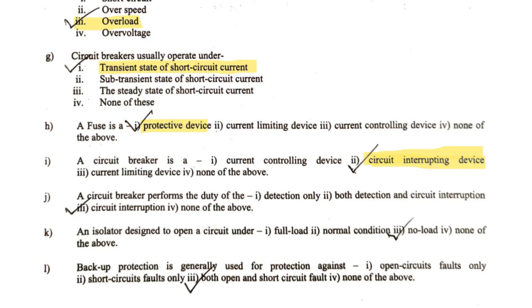The next question: a circuit breaker performs the duty of — detection only, both detection and circuit interruption, circuit interruption, or none of the above? The detection of a fault is done by a relay — a circuit breaker cannot detect the fault. It basically only interrupts. So option three — circuit interruption — is the correct answer. However, if the question had asked about a circuit breaker along with a relay, then both detection and circuit interruption would be the correct answer.